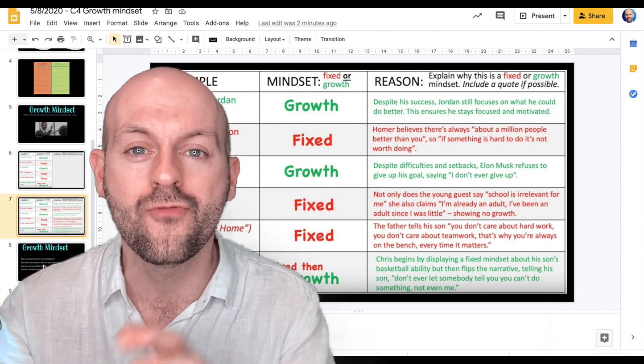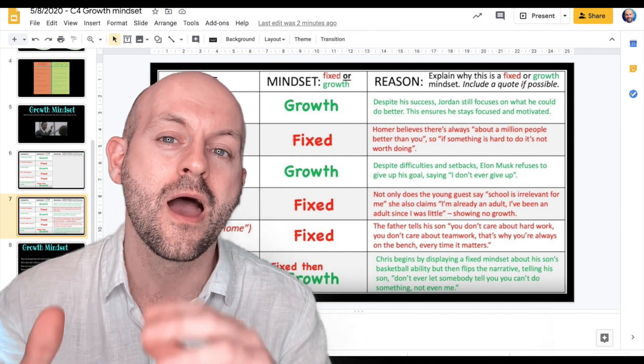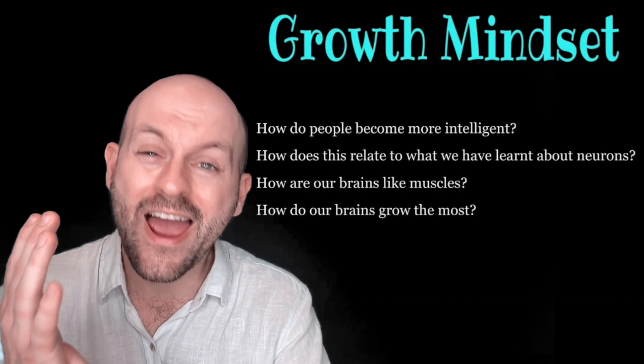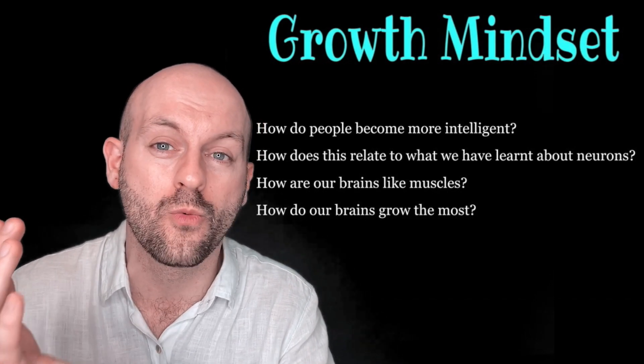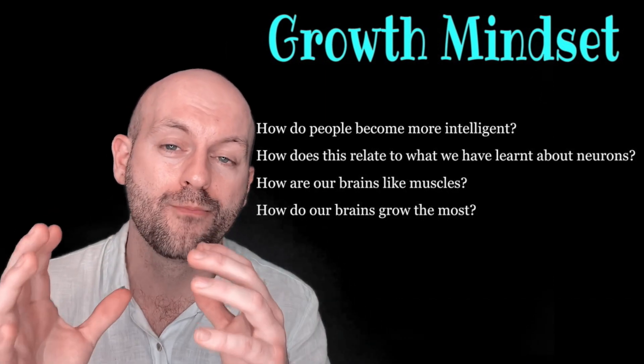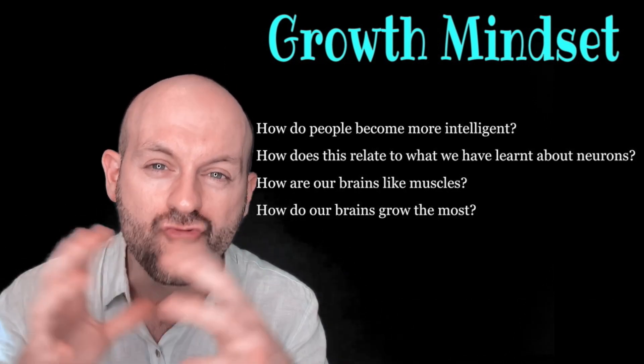Now, finally, before beginning your main task, just be thinking about these different questions. One, how do people become more intelligent? Two, how does that relate to what we've learned about neurons? Three, how are our brains like muscles? Four, how do our brains grow the most?